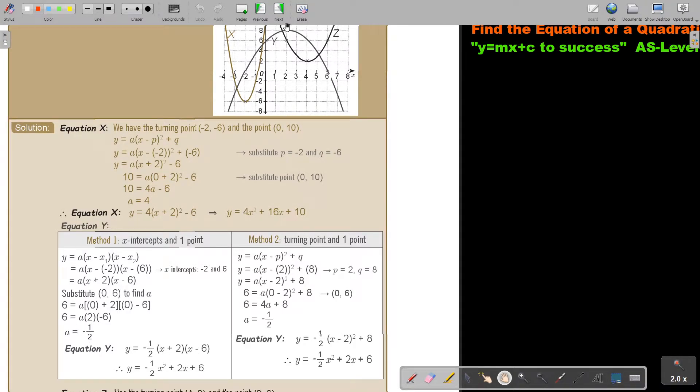Or I have the turning point, that is 2 and 8. So I substitute that, and then I substitute my extra point, 6 and 0, or 0 and 6 rather, and then I'm getting exactly the same.